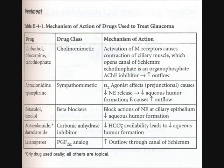I provided a graph with the names of the drugs, their subtypes, drug class, and mechanisms of action. For carbachol, pilocarpine, and ecothiophate, these are cholinomimetic drugs — they mimic cholinergic action. The mechanism of action is that they activate the M receptors, which allows contraction of the ciliary muscle, and when you contract the ciliary muscle, you open the canal of Schlemm. For ecothiophate specifically, this is an organophosphate acetylcholinesterase inhibitor, which basically increases the outflow and prevents blockade and accumulation in that region.